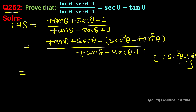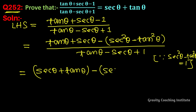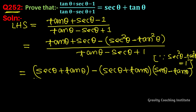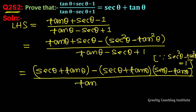Now we write this 1 as sec theta plus tan theta, and we will use the identity of a squared minus b squared. So we write: sec theta plus tan theta, times sec theta minus tan theta, upon tan theta minus sec theta plus 1.